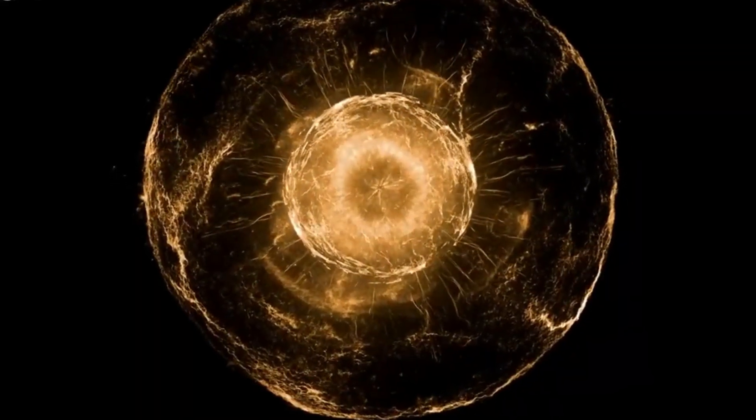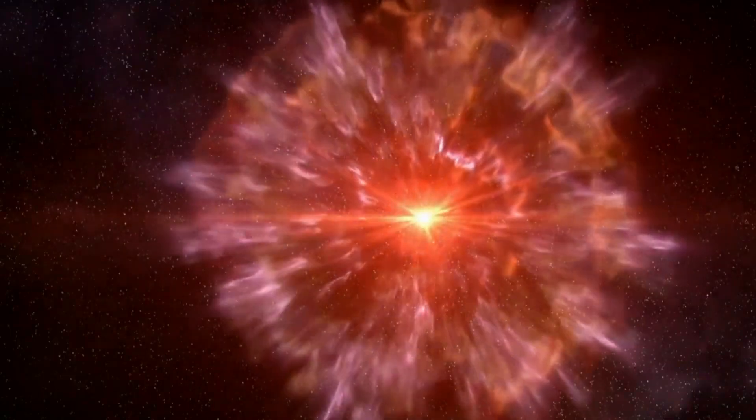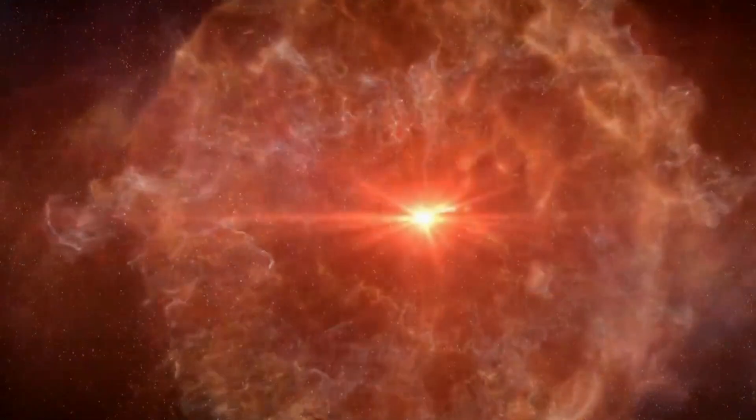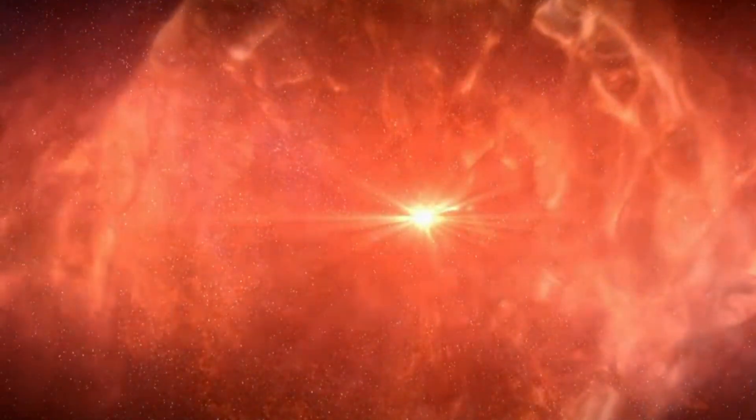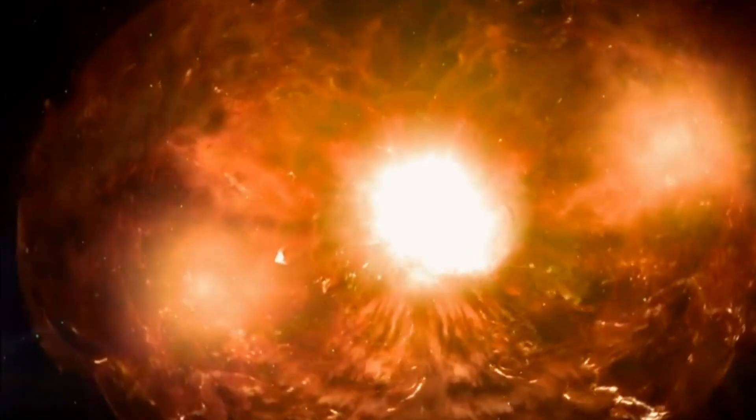Big stars like Betelgeuse explode as type 2 supernovae when they run out of fuel. They fall apart quickly and explode in a striking way. So, when a star bursts depends on what's happening inside it, how much fuel it still has, and how close it is to falling apart.